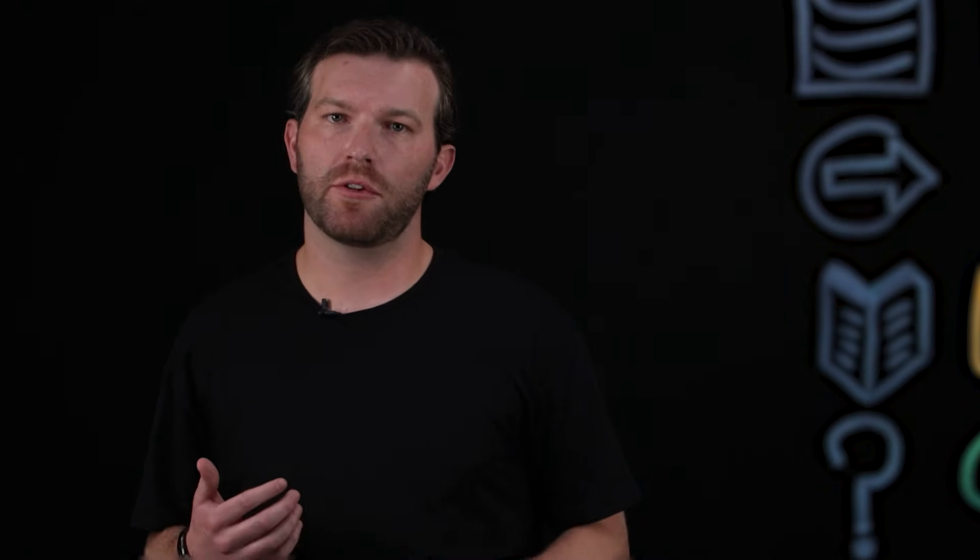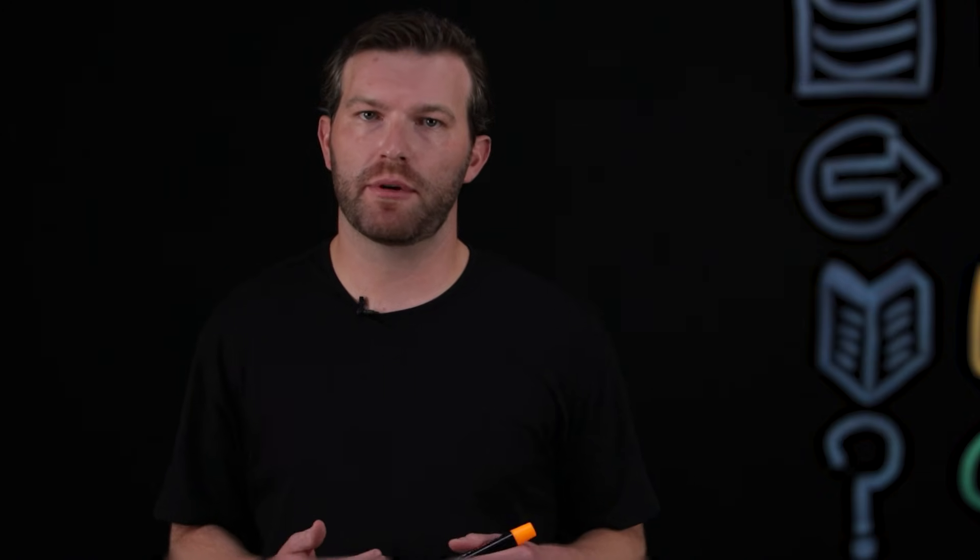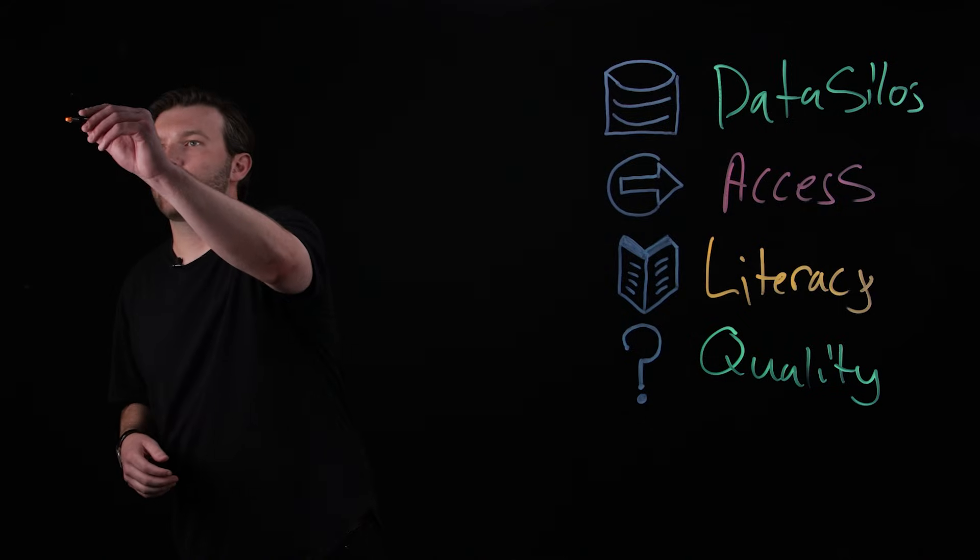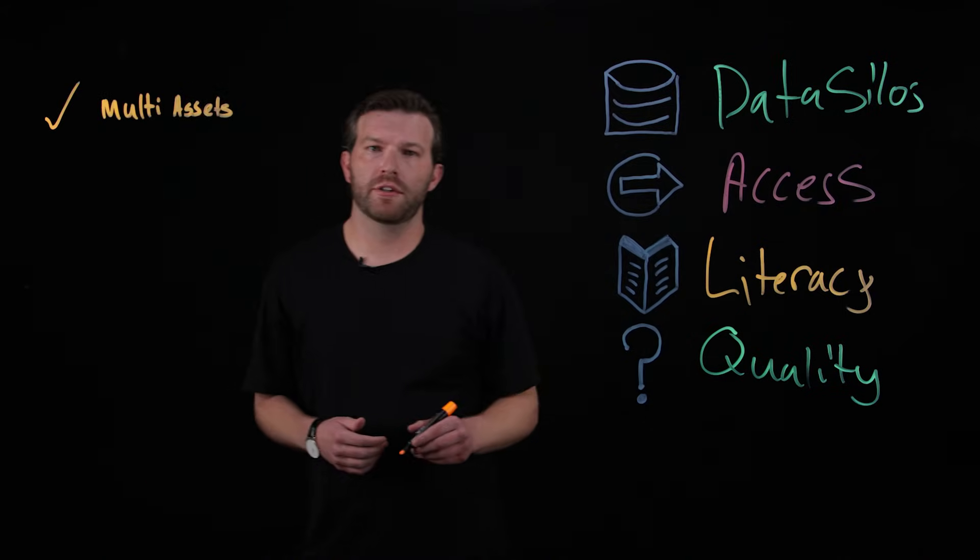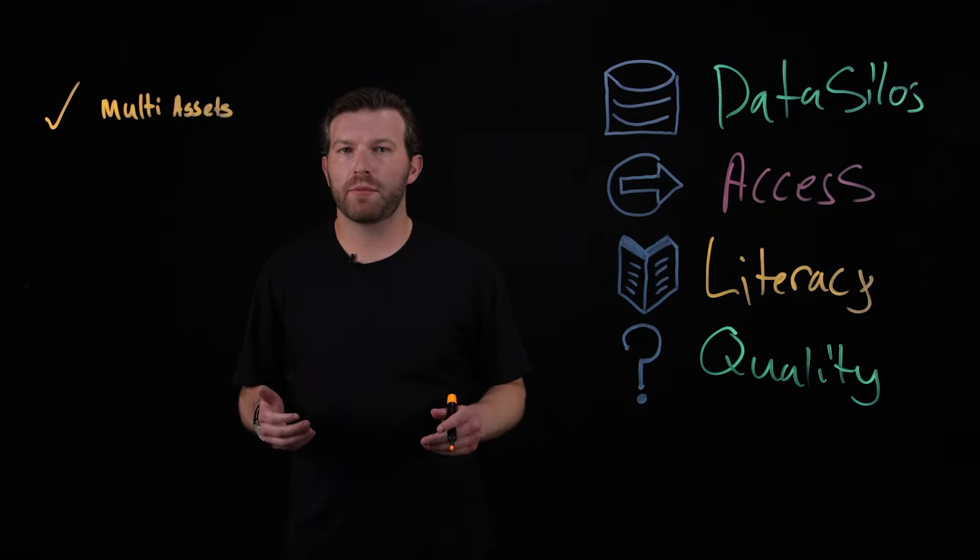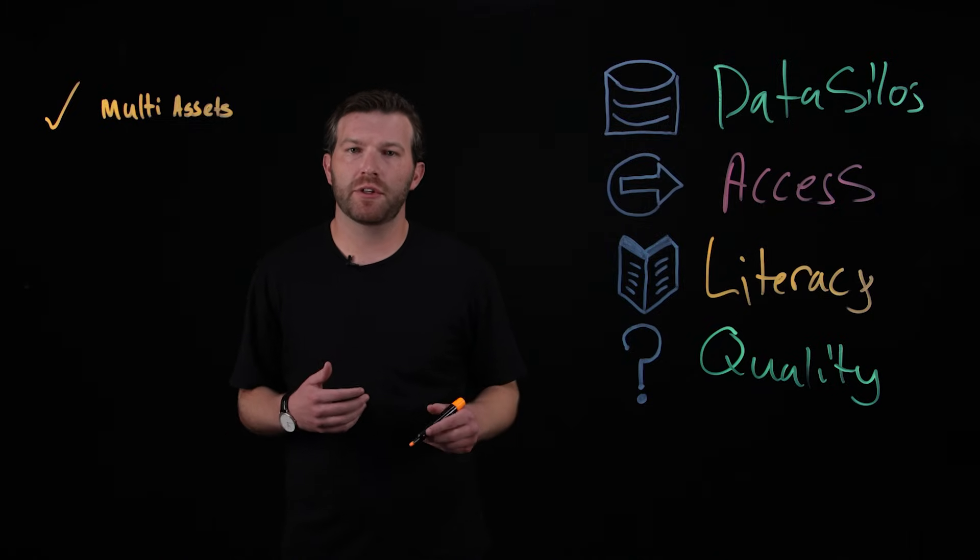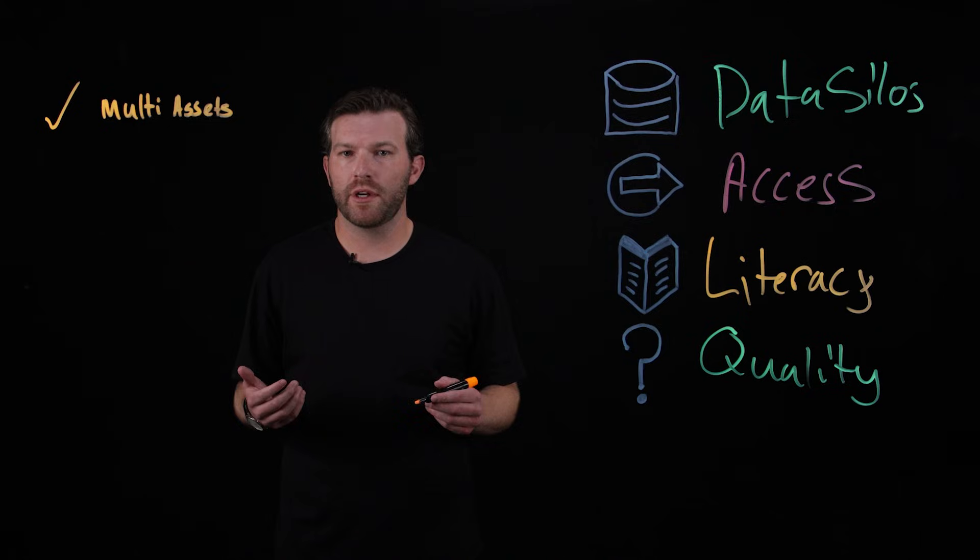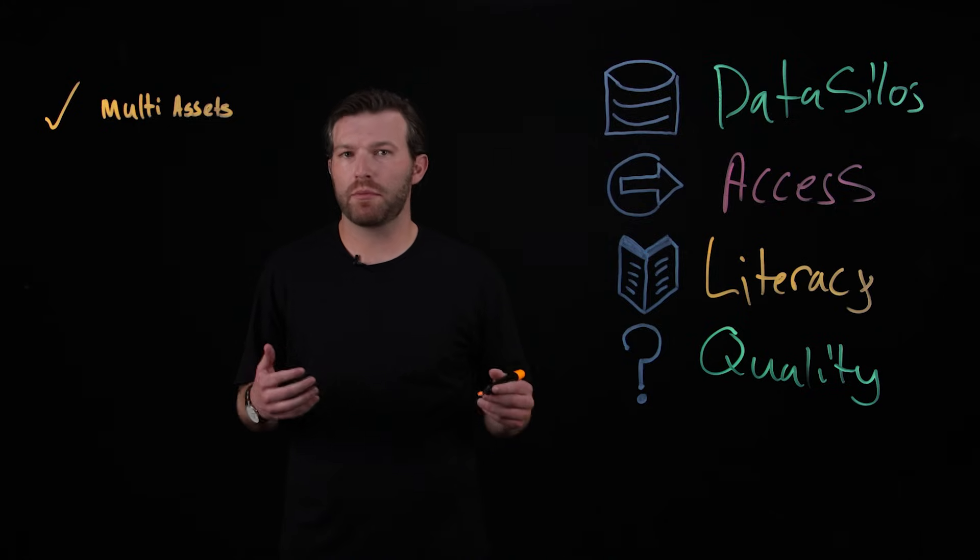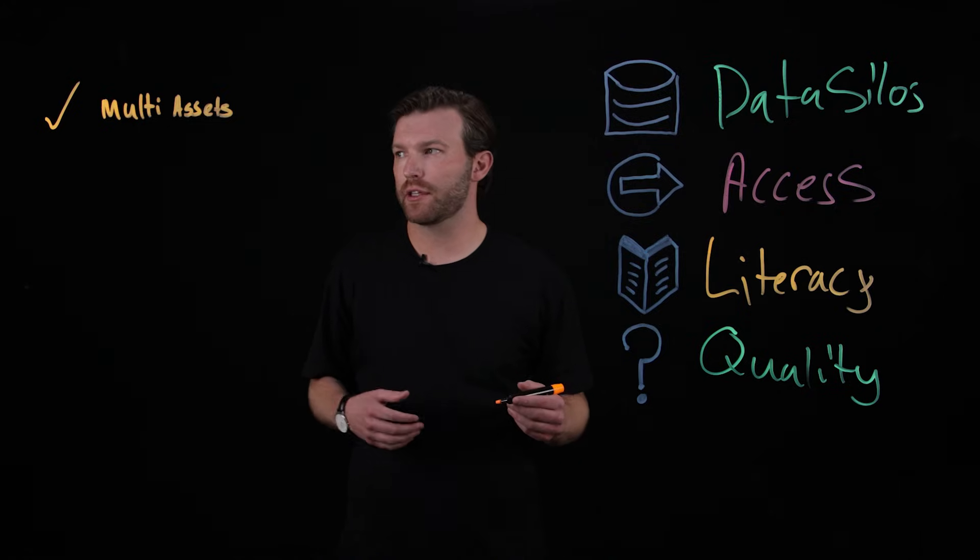Now that we've covered the market landscape and some of the pain points that organizations are facing today, I'm going to define what a data product is by running through the key characteristics that make up a data product. First, multiple assets. Data products are not made up of one asset, they're made up of multiple different assets. Similar to how products within a grocery store aren't made up of just one ingredient, they're made up of multiple different ingredients to create that product.